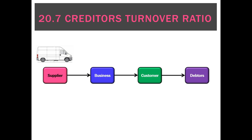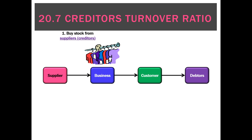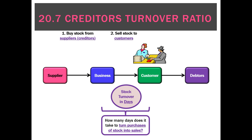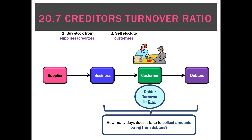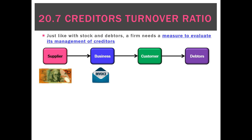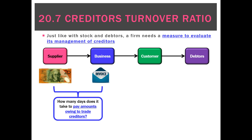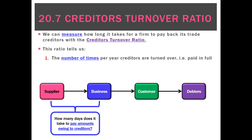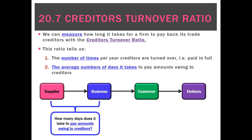What the creditors turnover ratio measures relates to the full cycle: we buy stock, put it on the shelf, sell it to customers — that average time was called stock turnover in days — then the average time to collect amounts owing from debtors was called debtors turnover in days. We can also factor in how long it takes for the supplier to invoice us and for us on average to pay them. That is the creditors turnover ratio, expressed either as the number of times per year creditors are turned over — paid in full — or as the average number of days it takes to pay amounts owing to creditors.